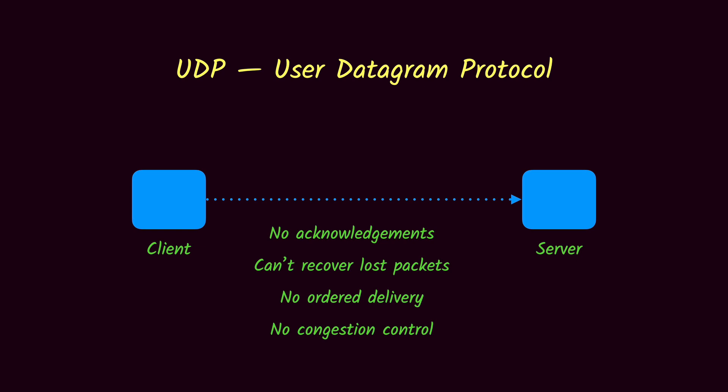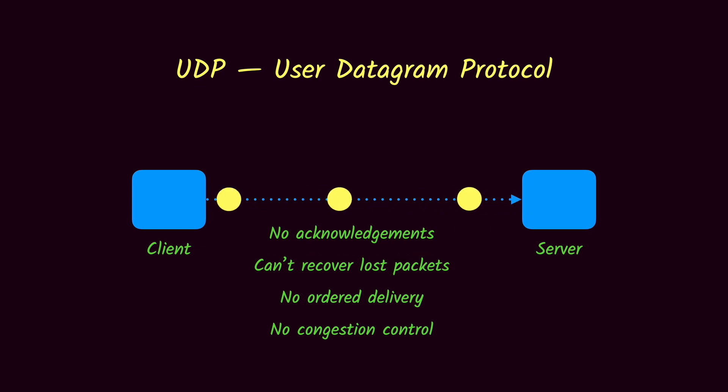Finally, there is no congestion control in UDP. The client cannot identify congestion in the network and will continue sending packets at the same rate regardless of network conditions.